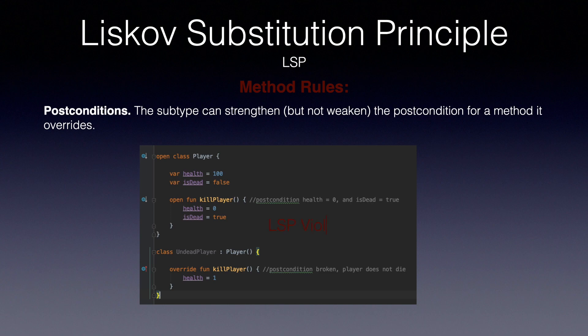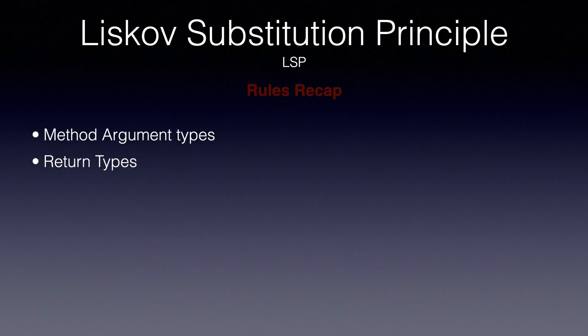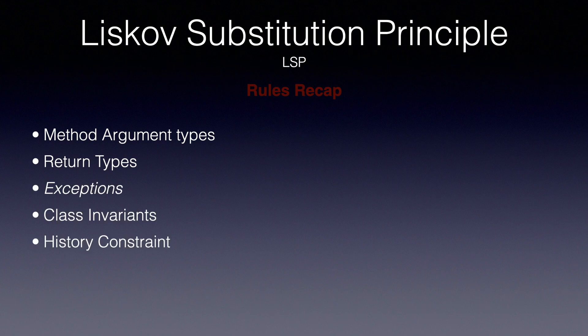Let's recap the rules: method argument types, return types, exceptions, class invariants, history constraint, preconditions, and finally, postconditions.